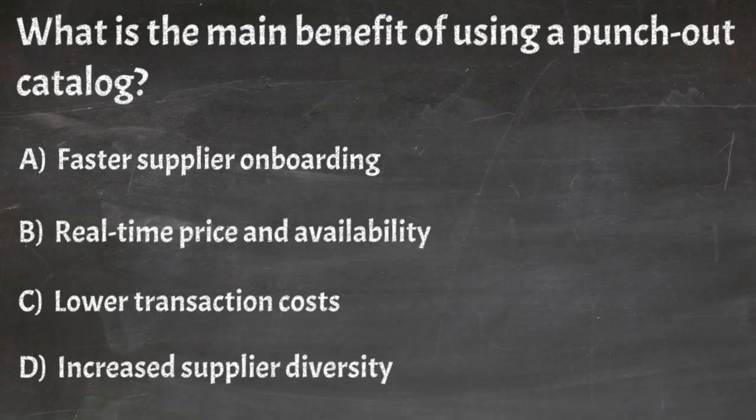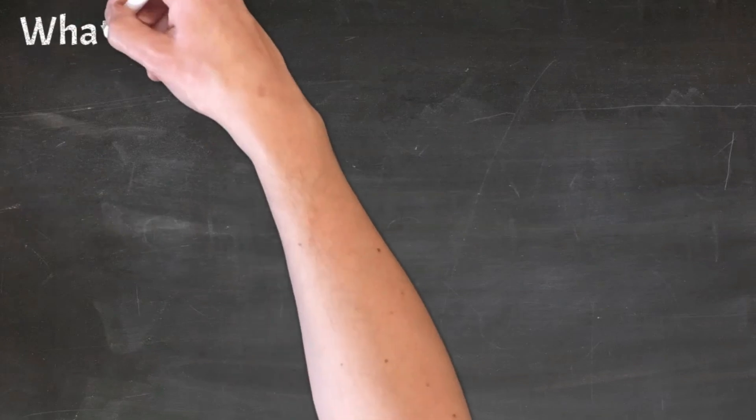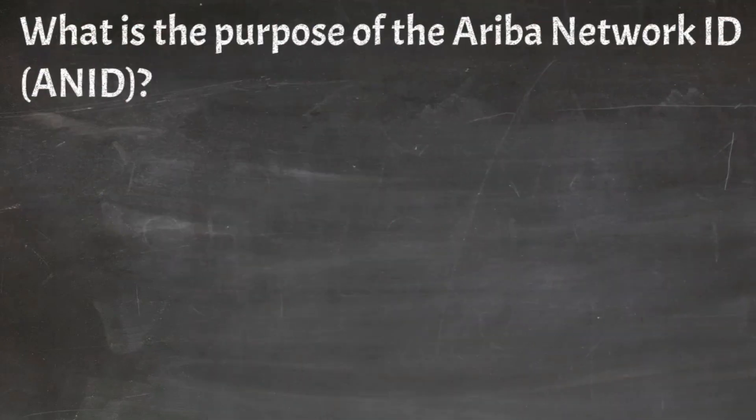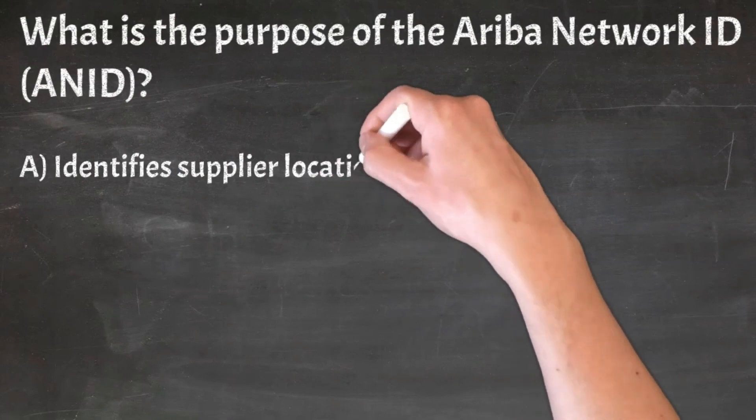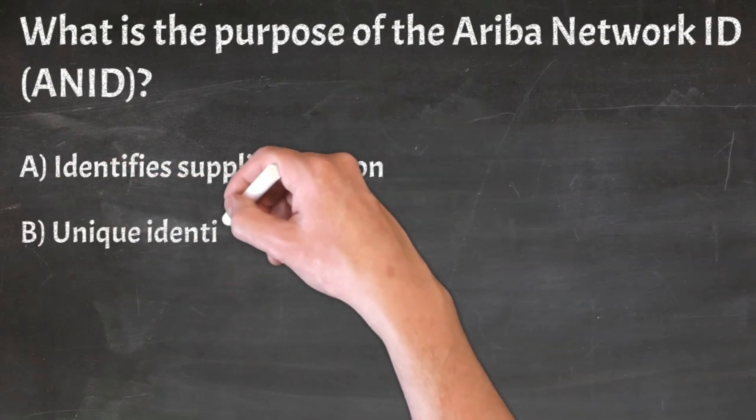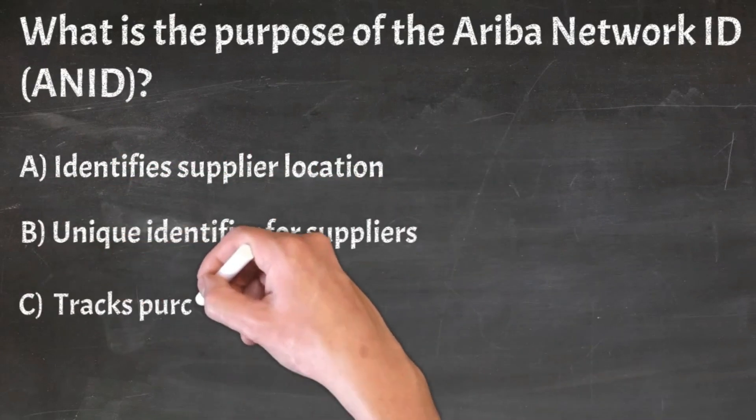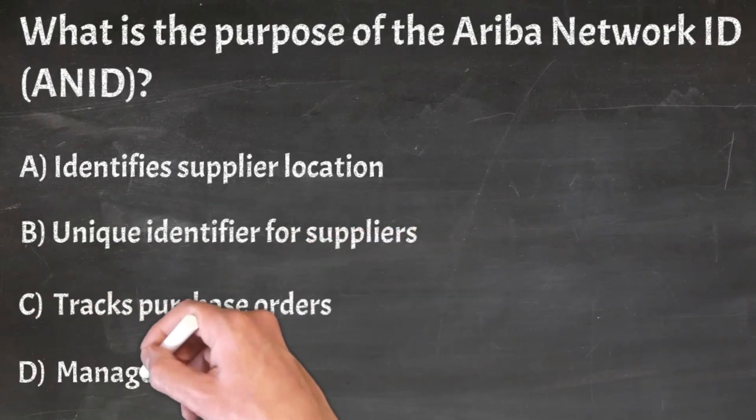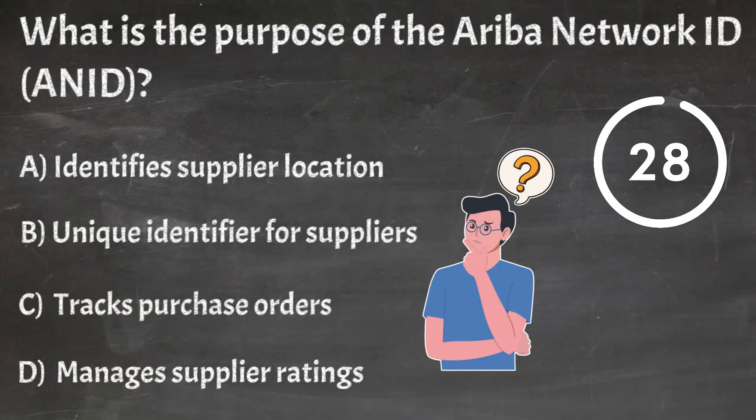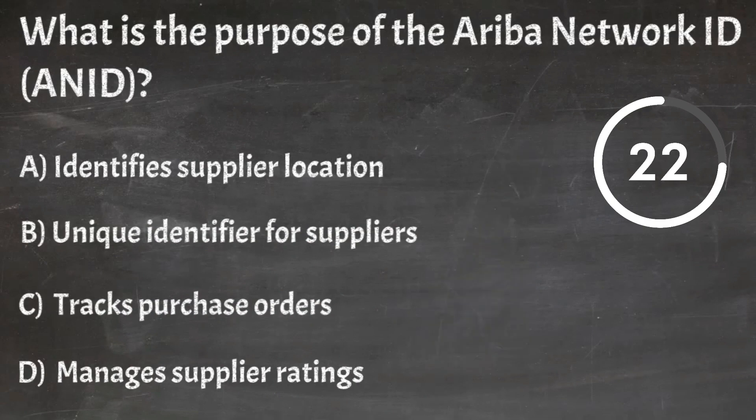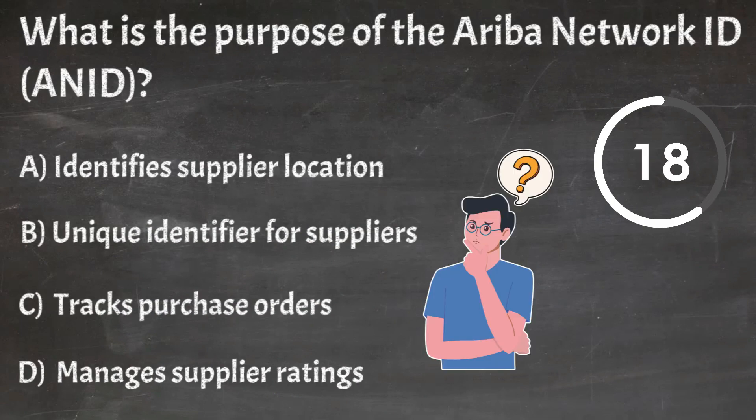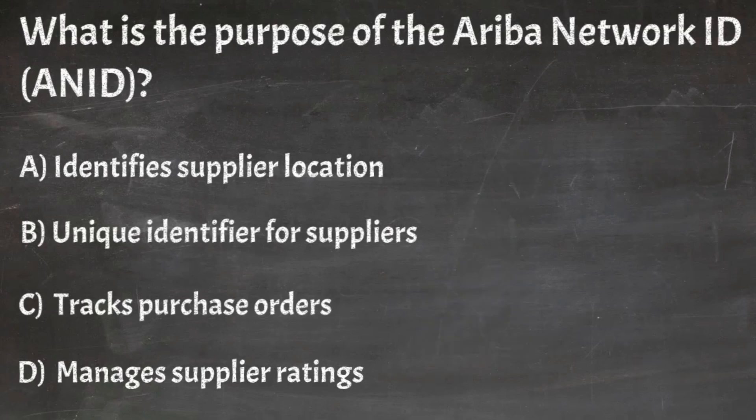Correct answer: B. Real Time Price And Availability. Question 16: What is the purpose of the Ariba Network ID? A. Identify Supplier Location, B. Unique identifier for suppliers, C. Tracks Purchase Orders, D. Manage Supplier Rate.